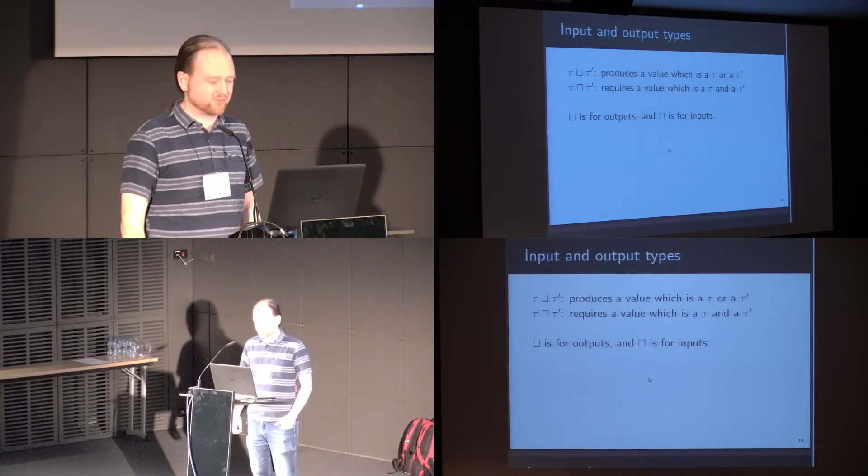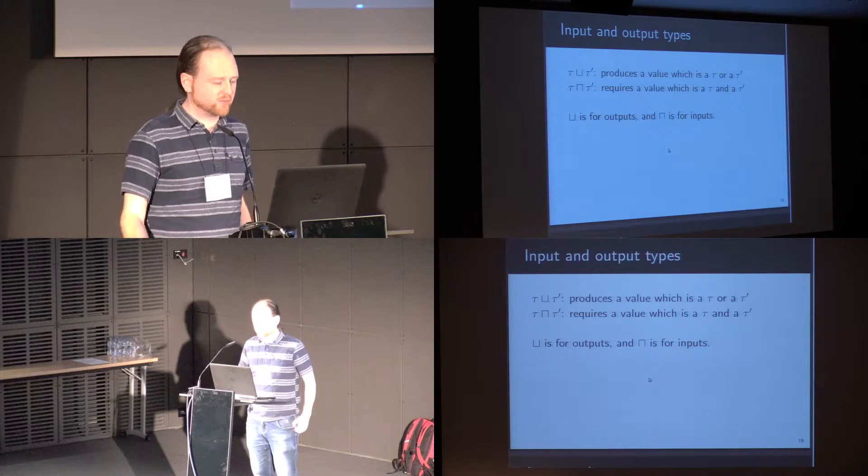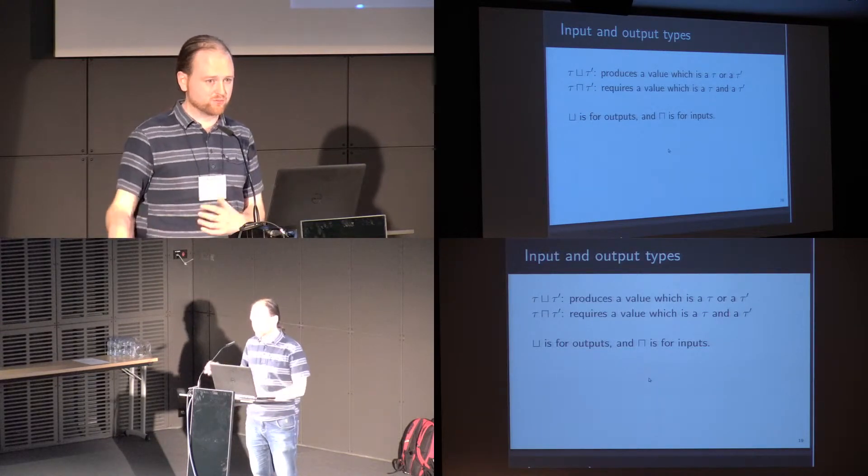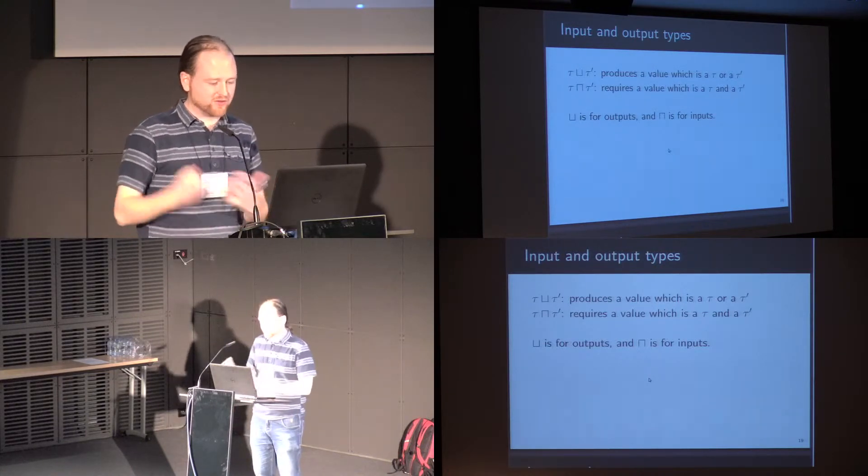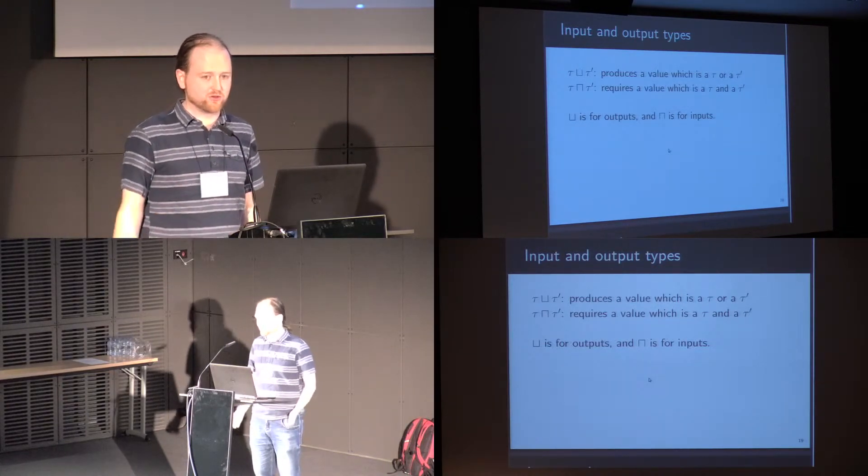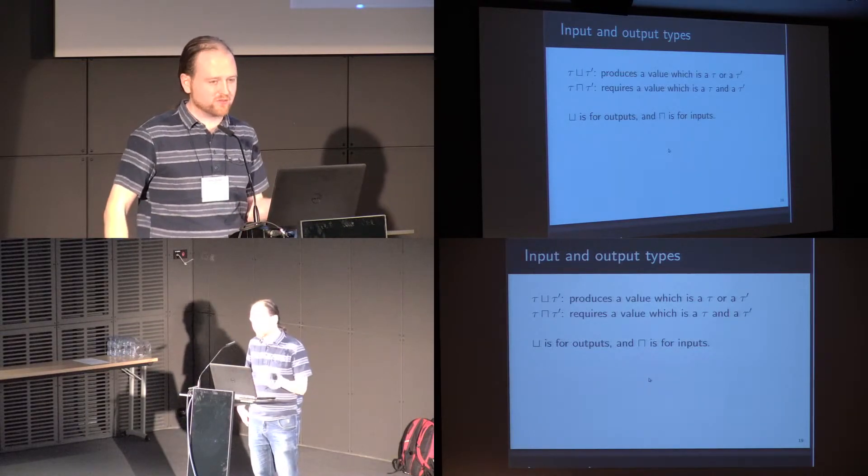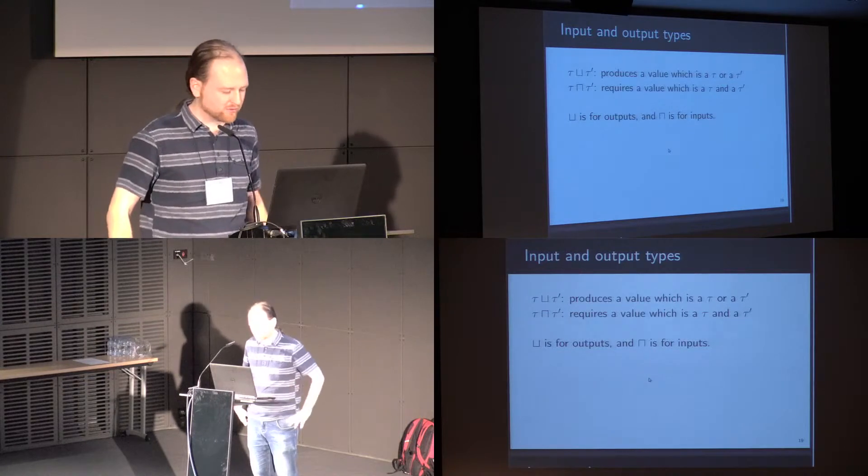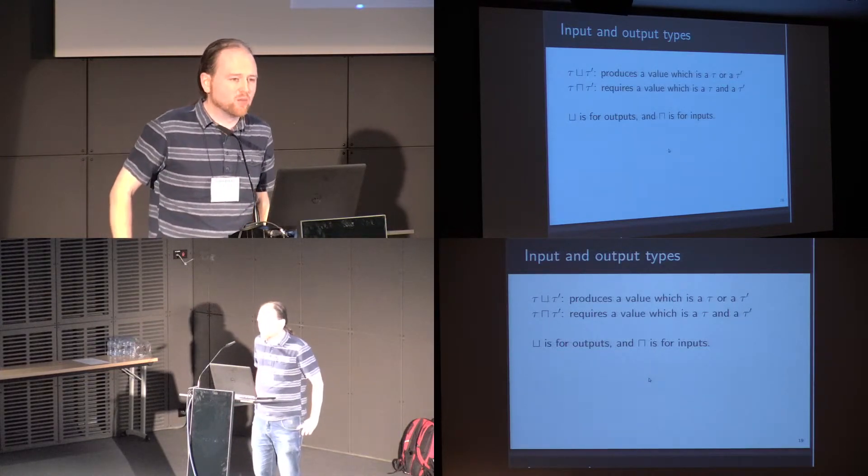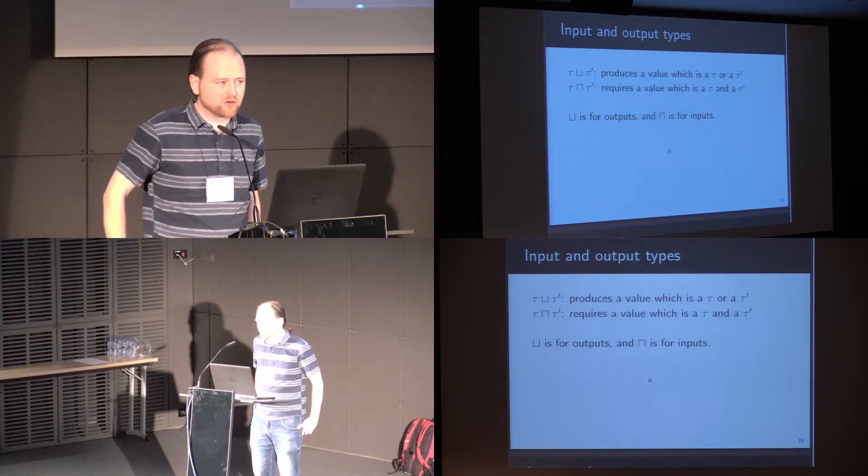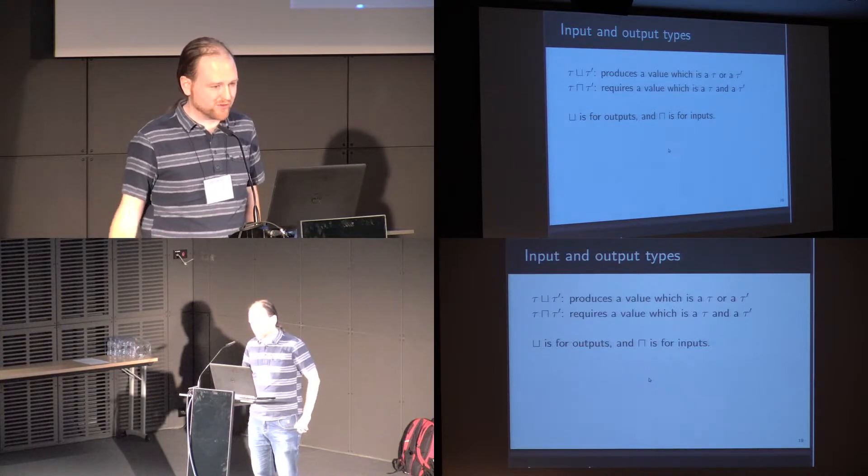These lattice operators, the upper bound and lower bounds, can be used to describe the sort of values that a function produces or requires. If we have a function that produces either A or B, we type it as producing the upper bound. And if we have a function that requires both A and B, we type it as taking their lower bound. The interesting thing is that upper bounds never occur when we're describing inputs, and lower bounds never occur when we're describing outputs.